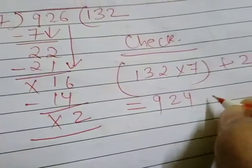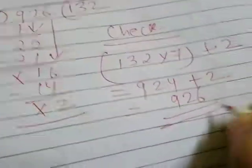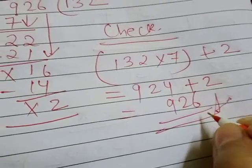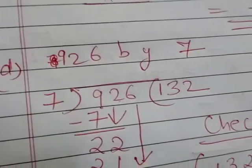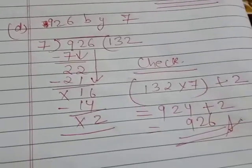Then 9 plus 2, 926. You can see 926 is coming in dividend place. Here also dividend is 926. This shows that our solution is correct.